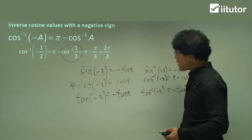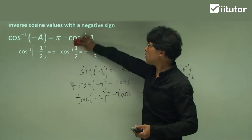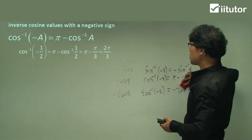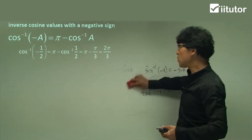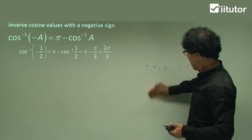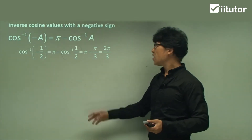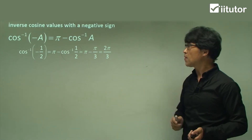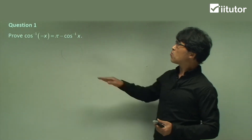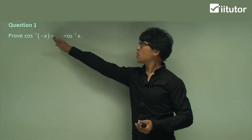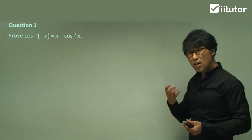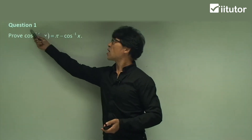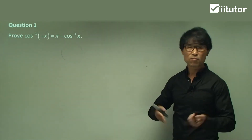This formula is really, really important because it is simply an exception. An exception is something not many people can remember. Your school teacher will likely make a question based on this exception — that's an important exam tip. Now, for Question 1, we are going to prove why that property is true, no matter what x values are. We are going to start from the left-hand side by letting y equal to it.